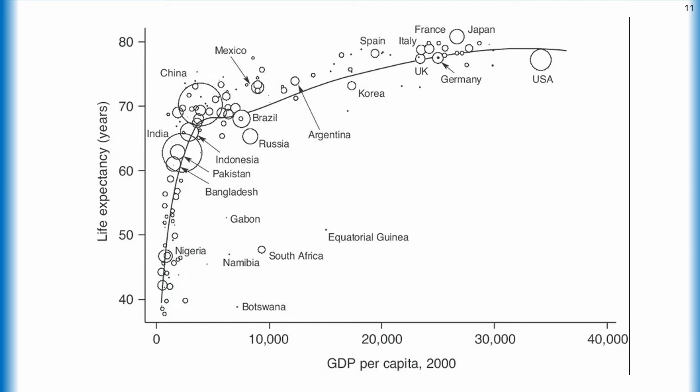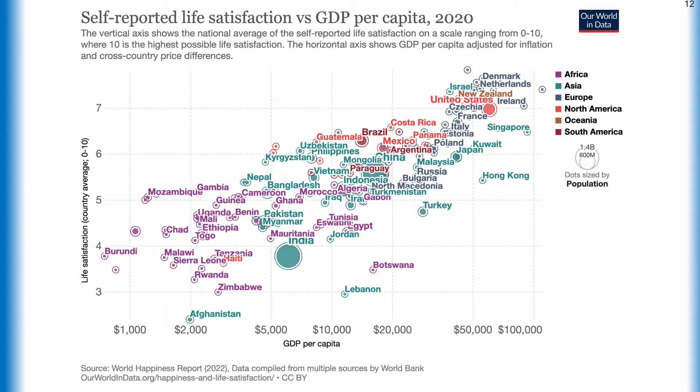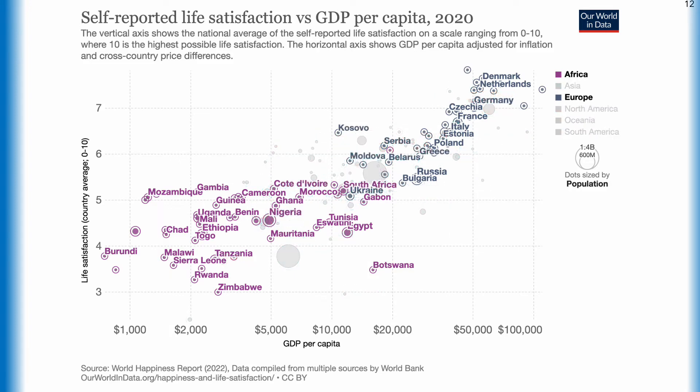People in countries with higher GDP are also happier. Here is the relation between life expectancy and GDP of varying countries. Isolating the African and European countries shows a clear example of higher GDP correlating with greater happiness. Not only is there a correlation at a set point in time, but also over time, to a point.